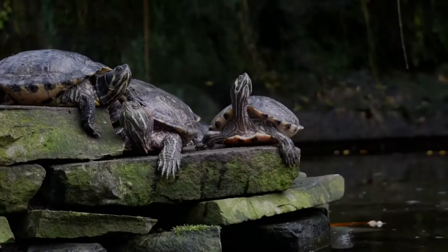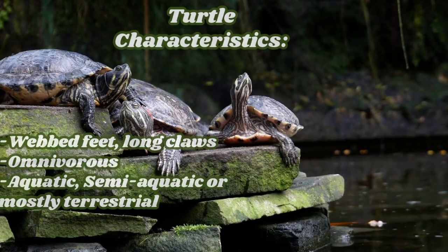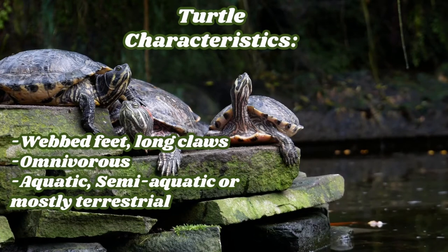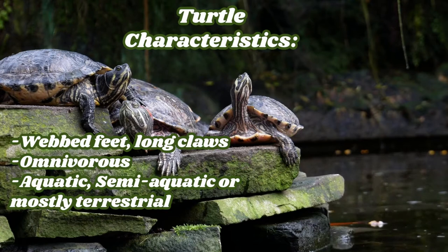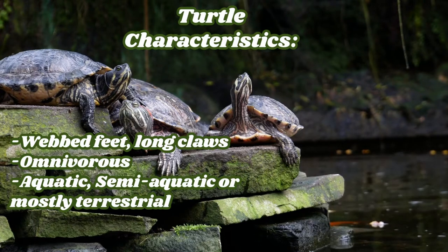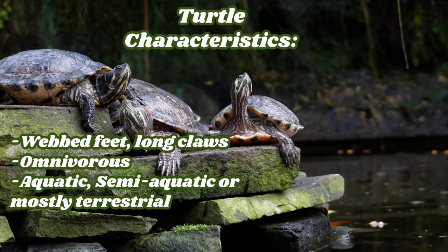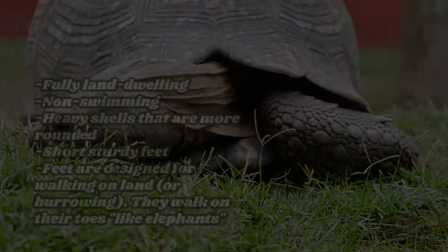Now let's discuss some common turtle characteristics. They have webbed feet and long claws, which are used for swimming and for grasping onto banks, floating logs, or branches in order to bask. They're also omnivorous, meaning they eat both animal matter and plant matter. They can also be aquatic, semi-aquatic, or mostly terrestrial, so there's a wide variety of what a turtle can be.